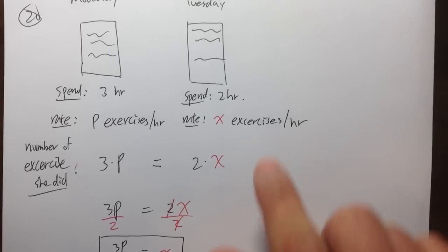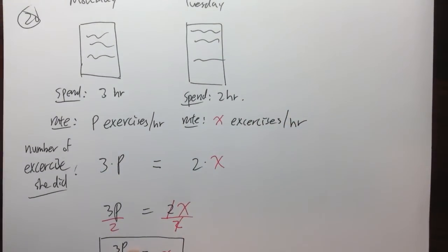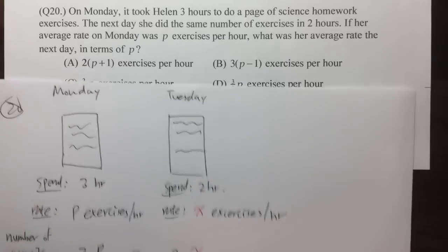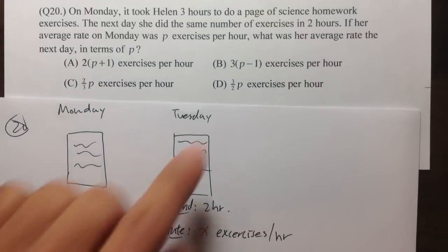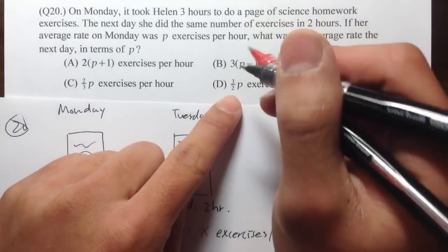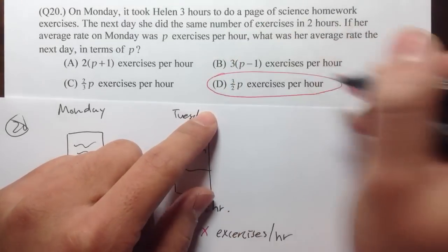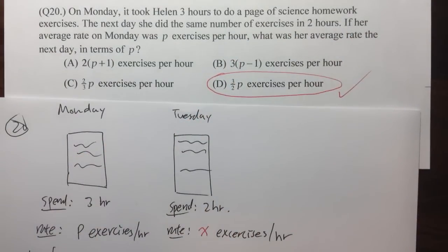So the rate on Tuesday was 3P over 2. And if we take a look of the choices, 3P over 2 exercises per hour, that's choice D. And here we complete all the quantity equations for the ACCUPLACER elementary algebra sample questions.